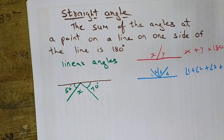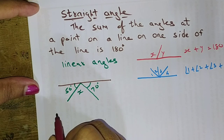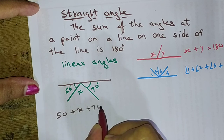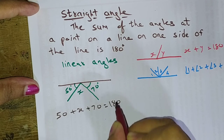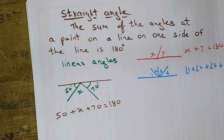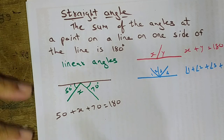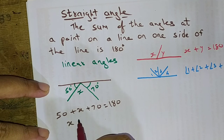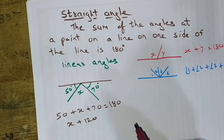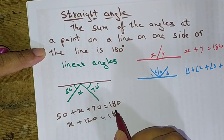As it is a straight line, it can be solved in this way: 50 plus x plus 70 should equal 180, because it is a linear angle on a straight line. By solving this, we get x plus 120 equals 180, since 50 and 70 add up to 120.